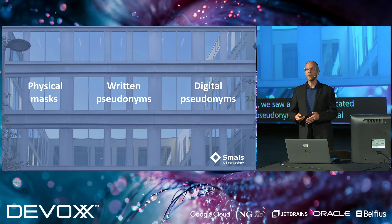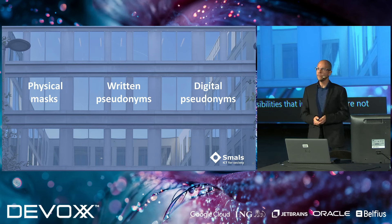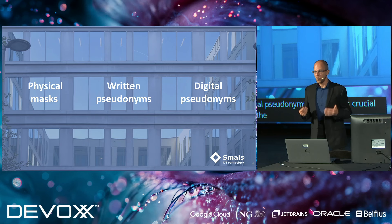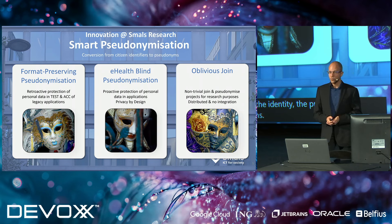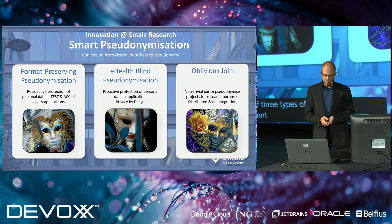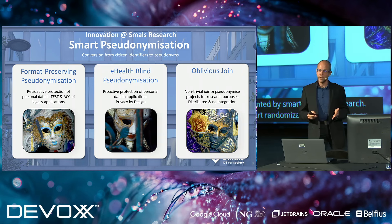What we will do today: I would like to convince you that digital pseudonyms have a crucial role to play to protect the identity, the privacy, and the personal data of citizens. Today I would like to talk about three types of smart pseudonymization invented by SMALS research — three systems for smart pseudonymization with a focus on identifier pseudonymization, that means converting citizen identifiers and social security numbers into unique codes.